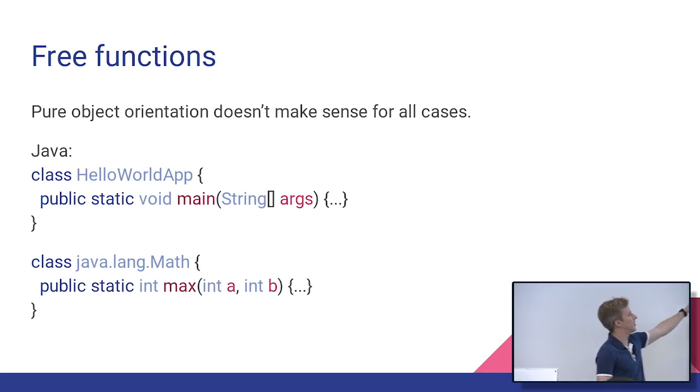So here's two cases of pure object orientation that happened in Java that don't really make a lot of sense. So the first one is your entry points, the static void main. That doesn't actually have to be part of a class, which is why it's static in the first place. Here it's related to class HelloWorldApp, but it could have been in any class. So that really proves that it's not actually connected to a class at all.